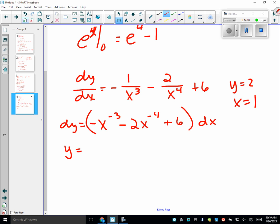Don't I add 1 to the exponent and put the new number underneath? Okay, so isn't this negative x to the negative 2 over 2. Is that right? Yes. Okay, what is this? Plus, 2x to the negative 3 over 3. Right? Now, 6 to the x. Plus C.